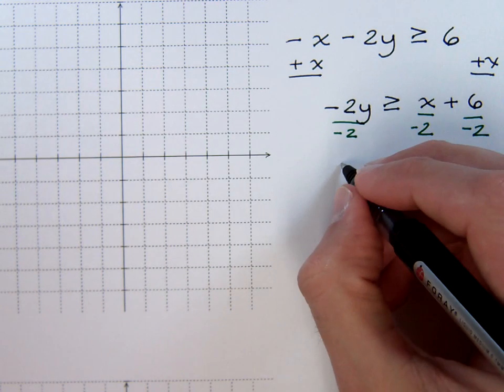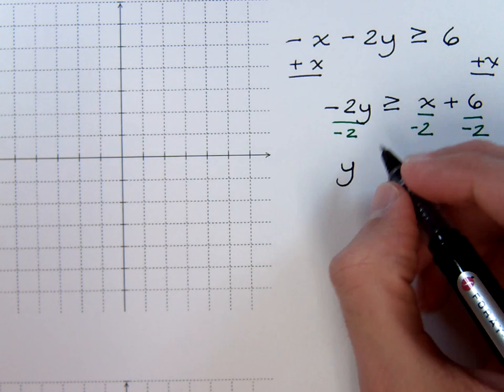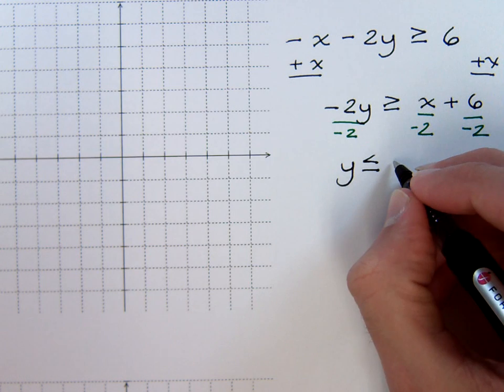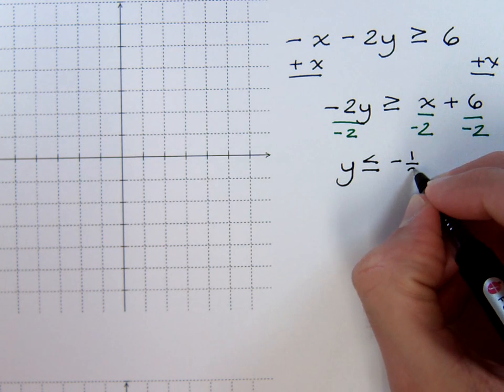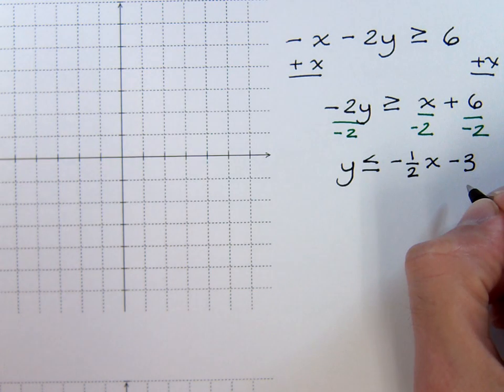Now keep in mind that since we divided by a negative, this inequality symbol is going to change directions. So this is now going to be y is less than or equal to negative one-half x minus 3.